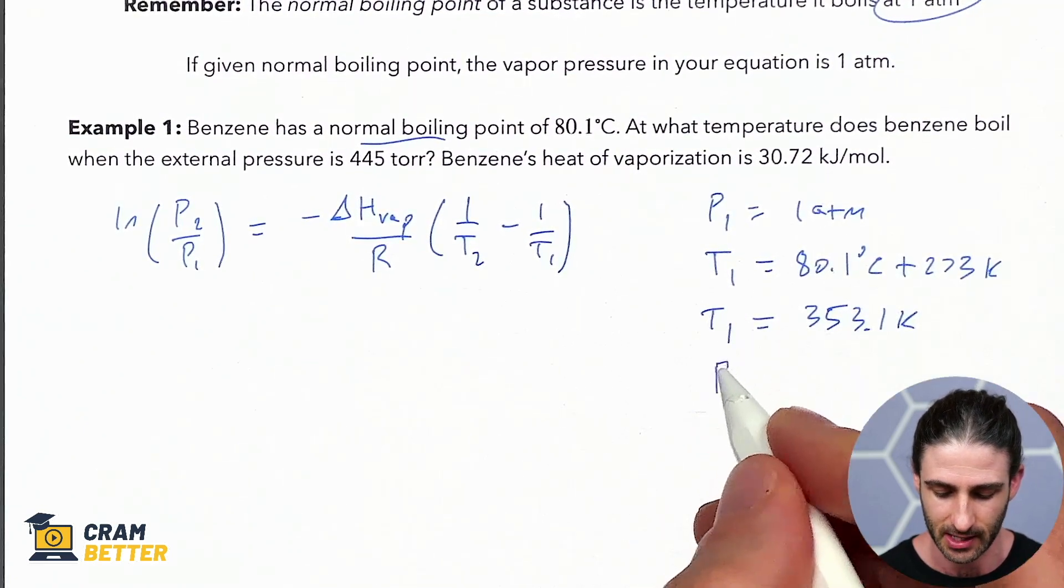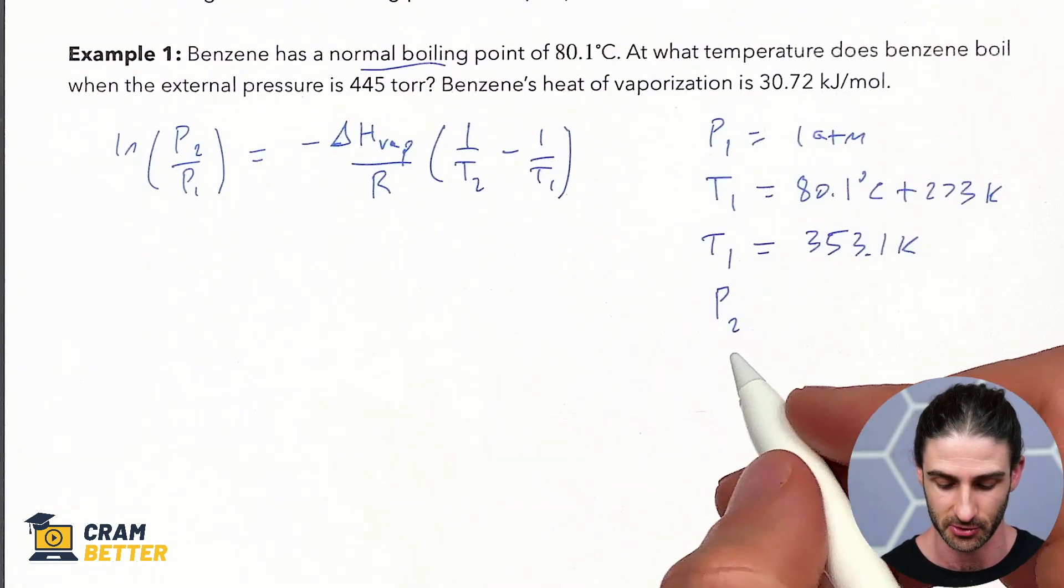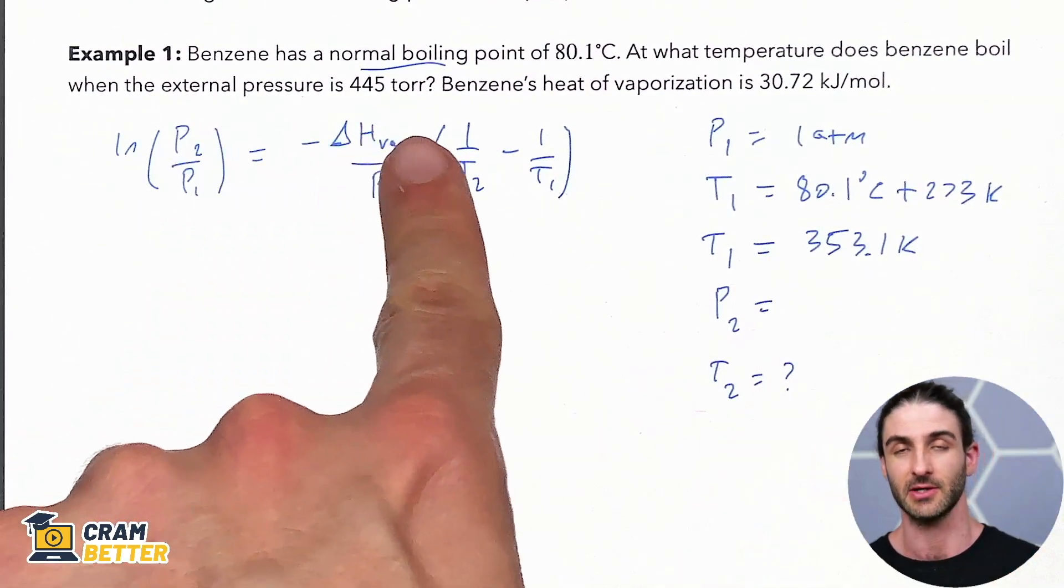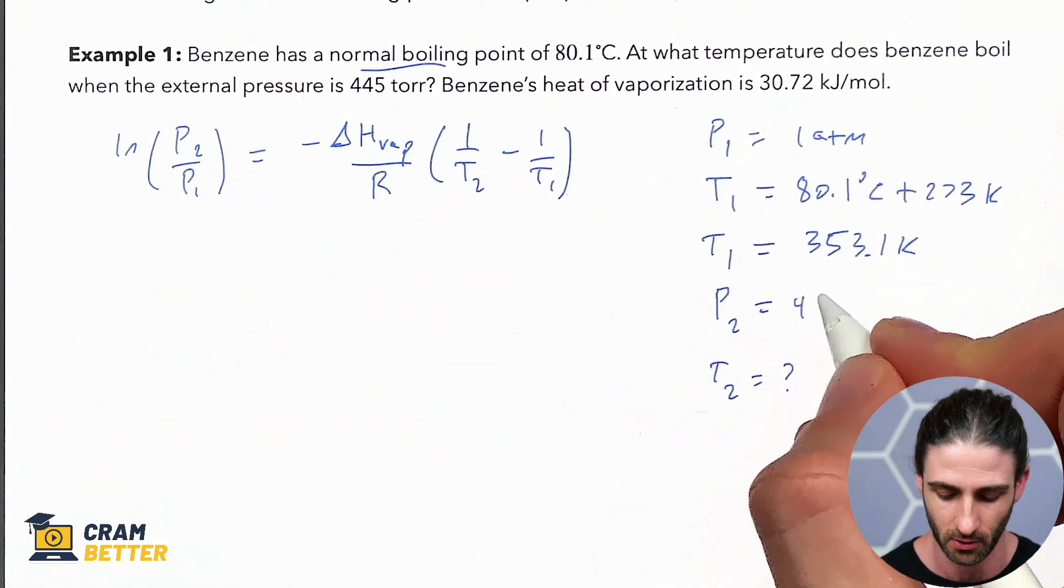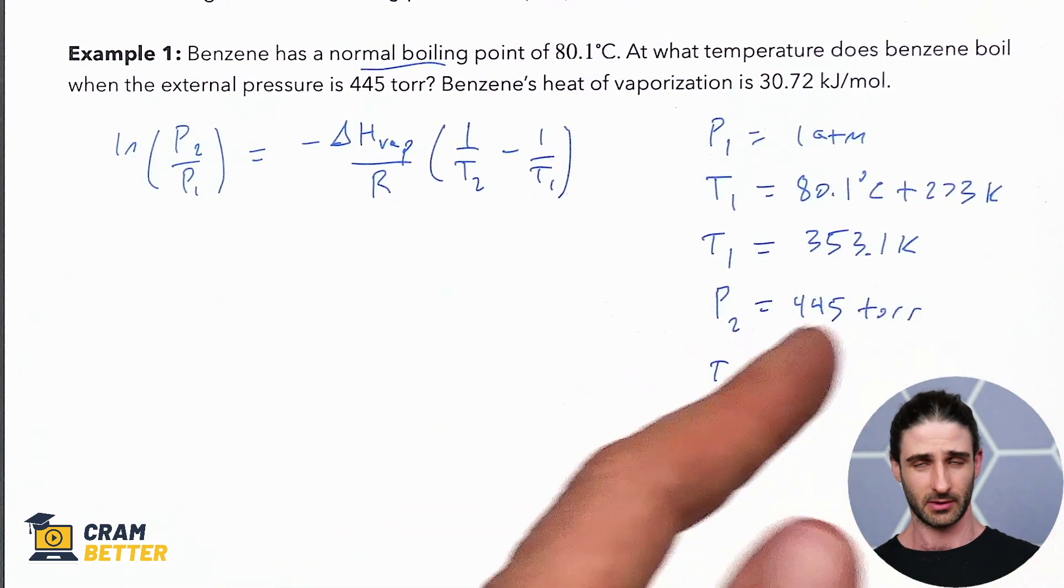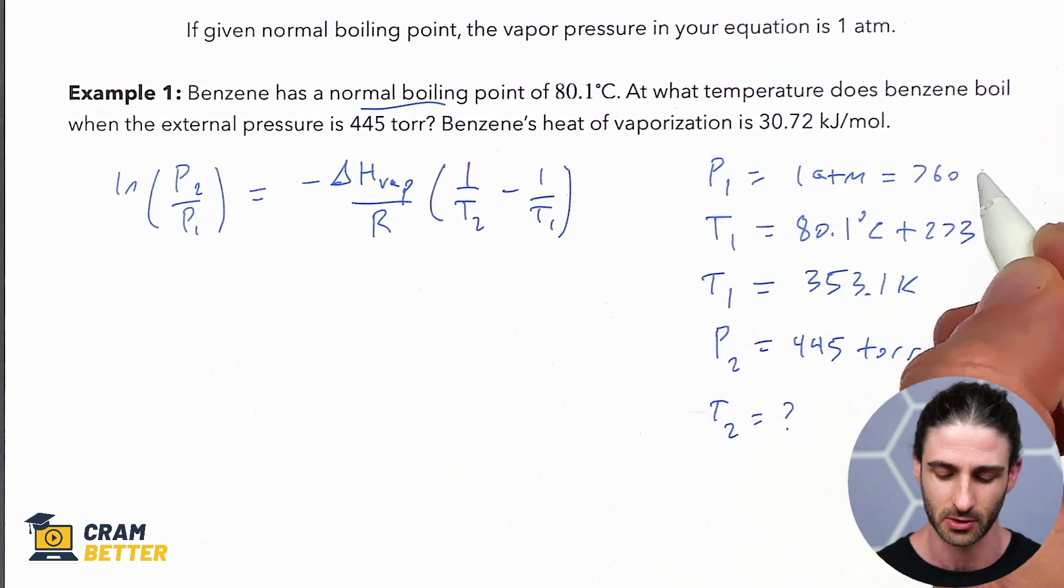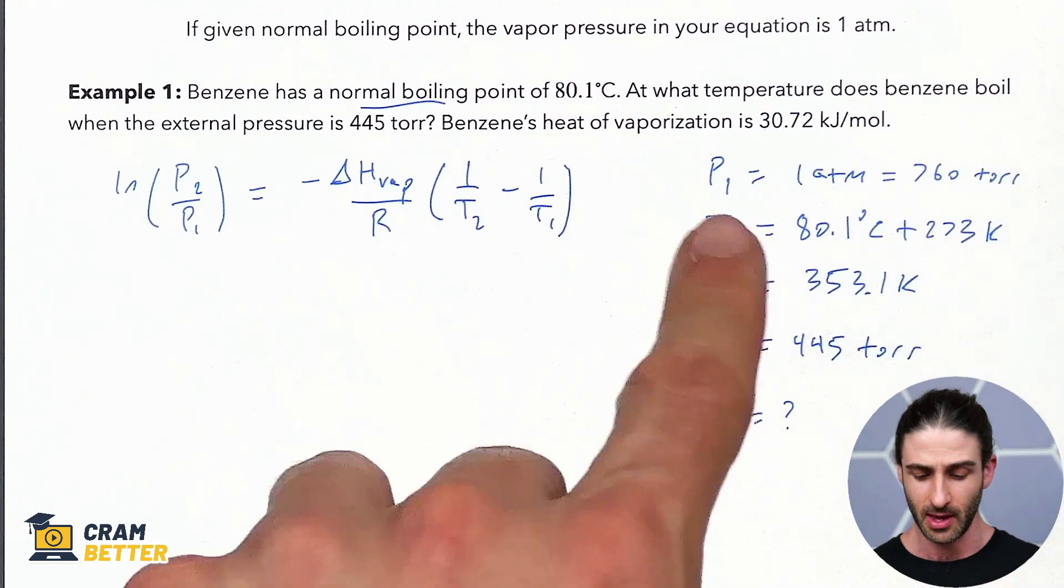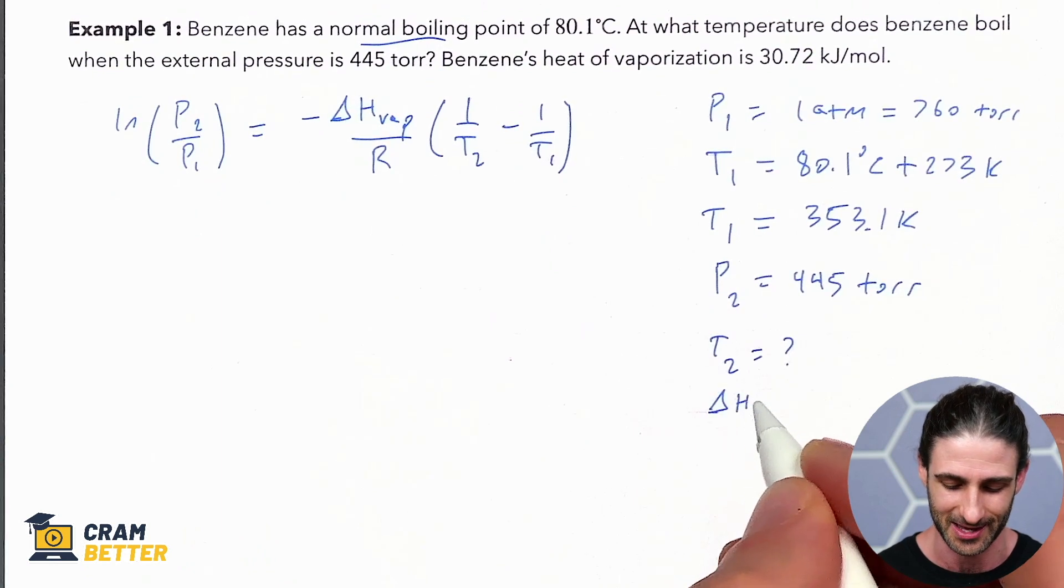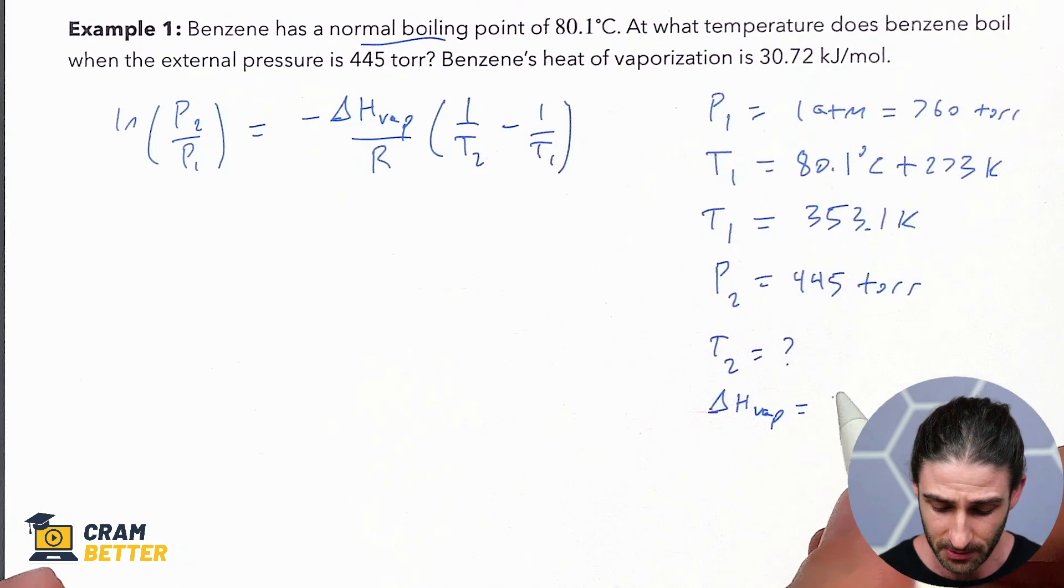Alright, good stuff. So, now, let's go on to the second pressure and temperature. At what temperature does benzene boil? So, we're looking for some other temperature. I'm going to write that as T2. So, T2 equals something. And then the pressure, they tell us, is 445 torr. So, 445 torr. Cool. Now, immediately, I'm in torr. They give me a pressure over here. Probably wanted to convert this atmospheres into torr. So, that's going to be 760 torr. You definitely have to remember that conversion factor. So, don't forget that. And now, at this point, we have basically everything. They tell us the heat of vaporization as well. So, I'll write that down over here. And then we're just going to plug in and solve this equation.